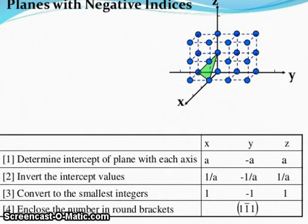Plane with negative indices. Determine the intercept of plane with each axis: x = a, y = -a, z = a. Invert the intercept values: 1/a, -1/a, 1/a. Convert to the smallest integers: 1, -1, 1. Enclose the numbers in round brackets: (1, 1̄, 1).